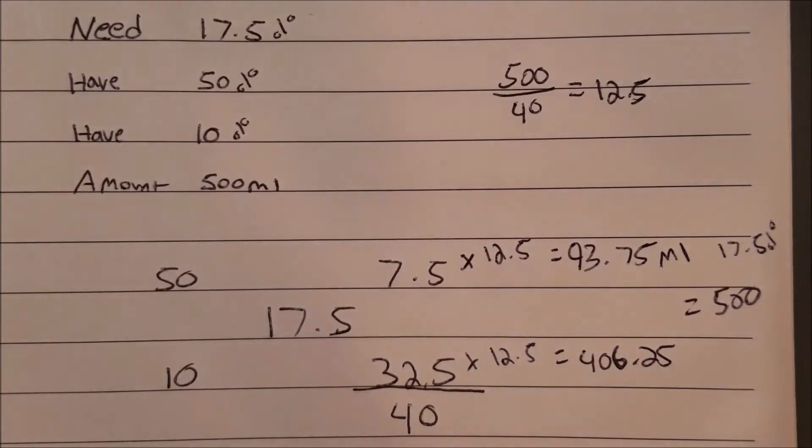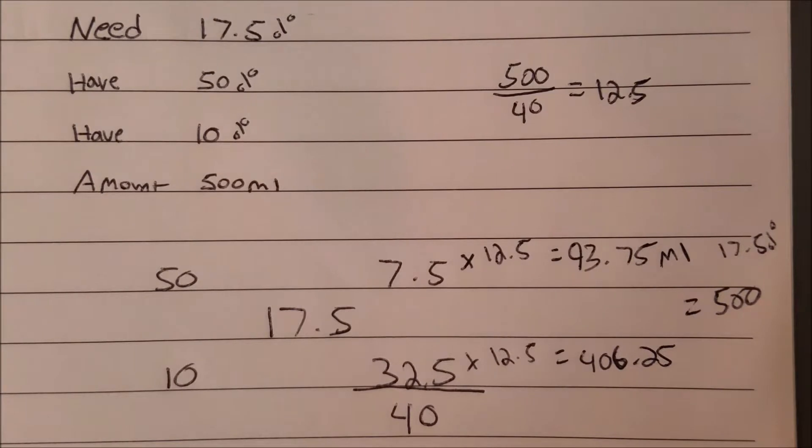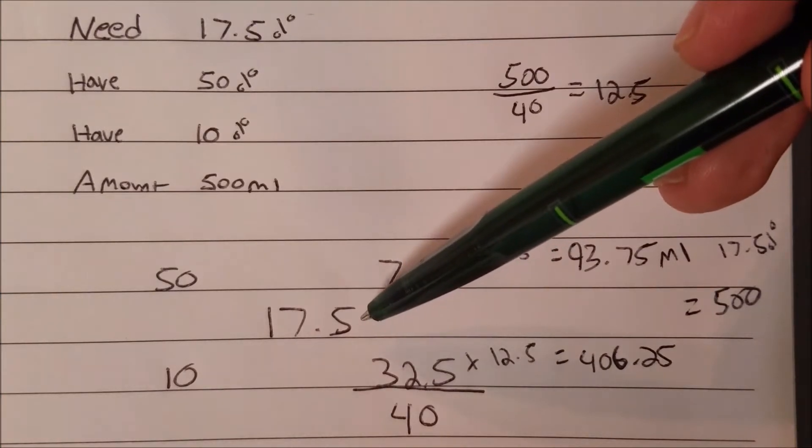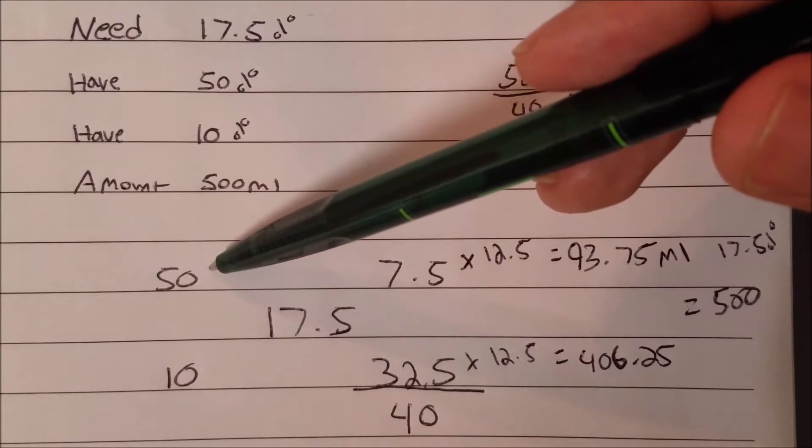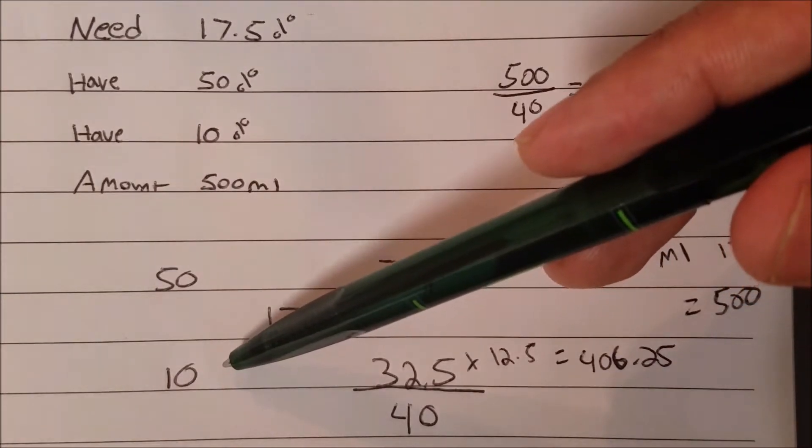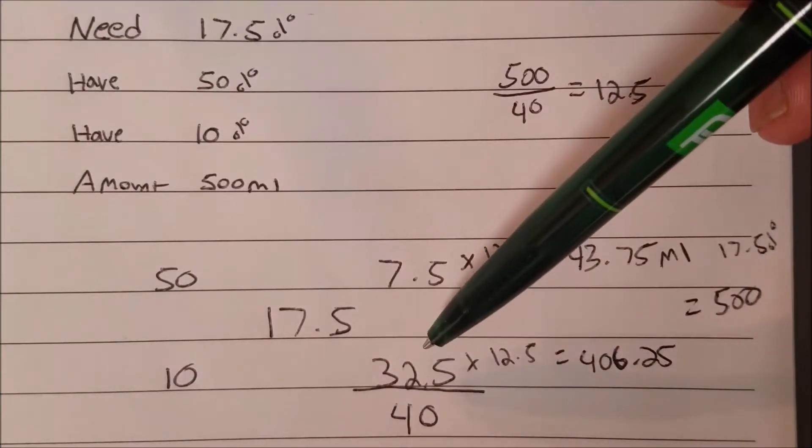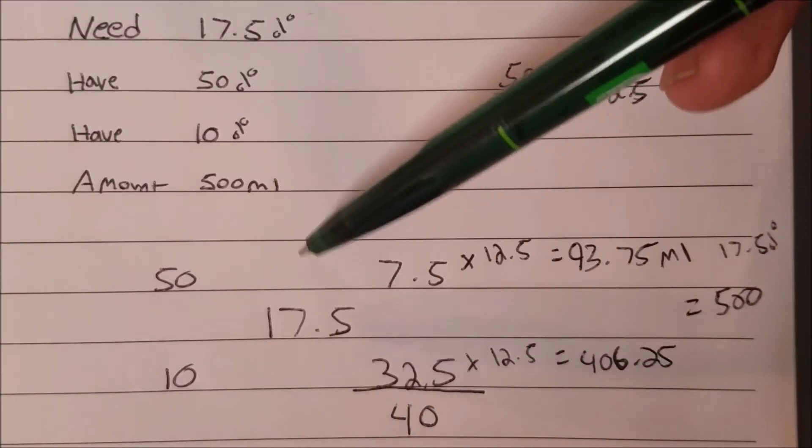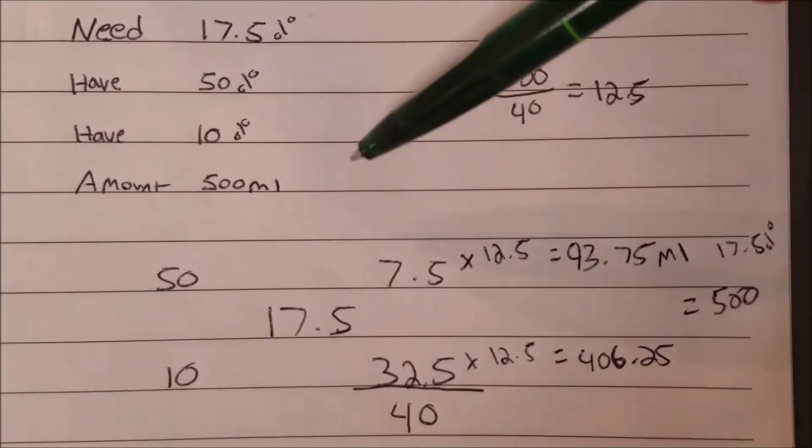That's it. That's how you solve this problem. Let me walk you guys through what I did one more time. The first step: write what you need in the middle, so I wrote 17.5%. Step 2: write what you have on the left with the high number on top, so dextrose 50% and dextrose 10%. Step 3: cross subtract. So 50 minus 17.5 is 32.5, and 17.5 minus 10 is 7.5. You're not going to work with any negatives, just 7.5.